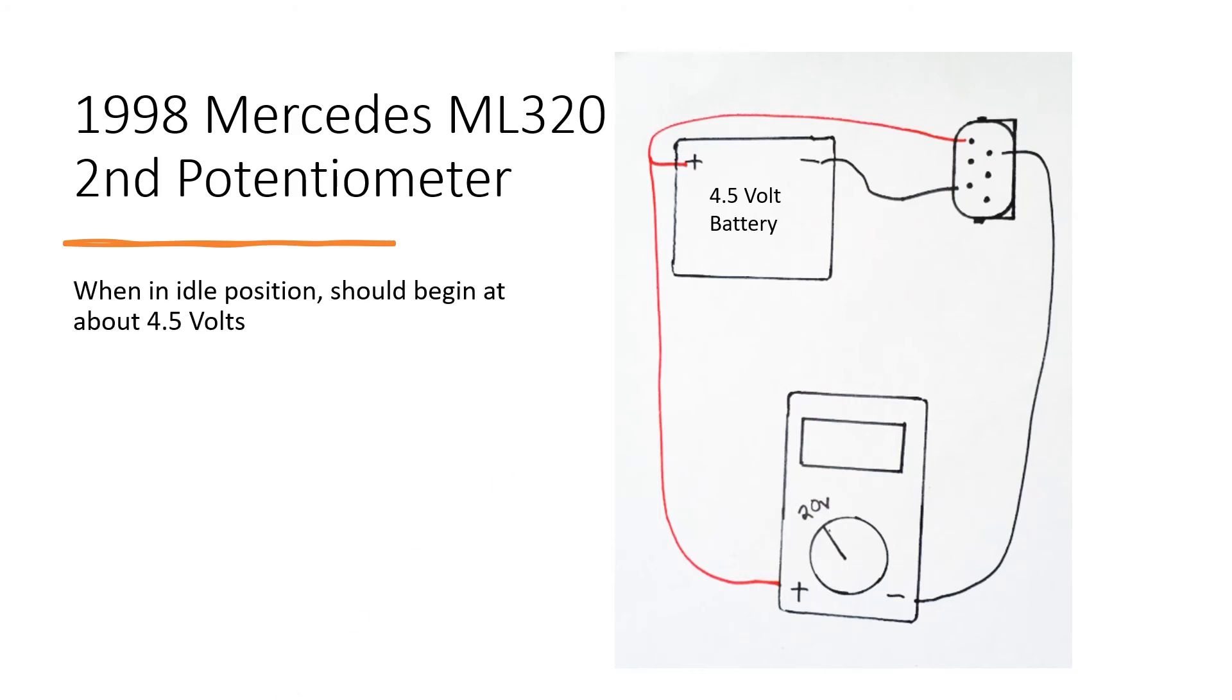In its idle position, it should read about 4.5 volts once more. As you press it in, it should stop around 2.4 volts. You are checking for spikes and glitches during these tests.